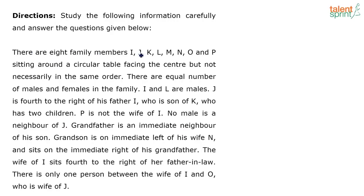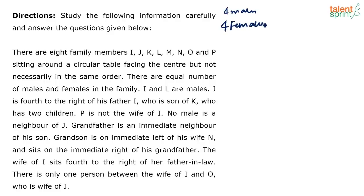There are 8 family members — I, J, K, L, M, N, O and P — sitting around a circular table facing the centre, but not necessarily in the same order. There are equal number of males and females in the family. So, there are 4 males and 4 females. That's the first thing we can establish.